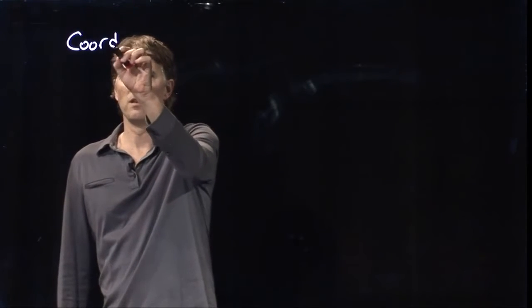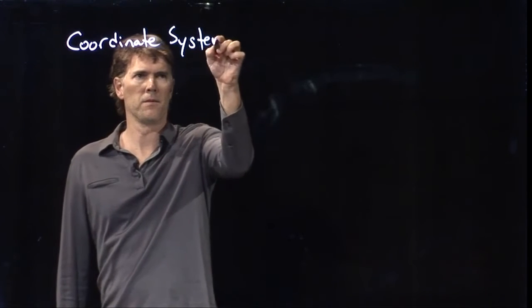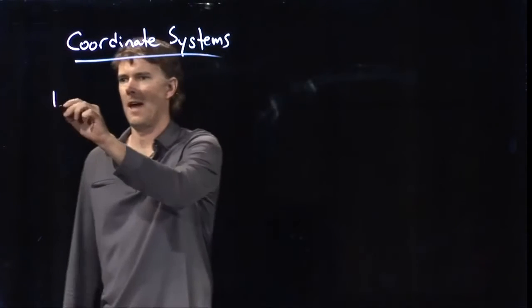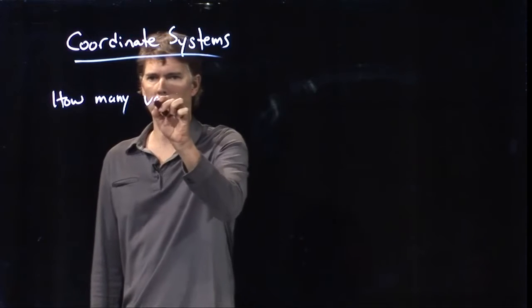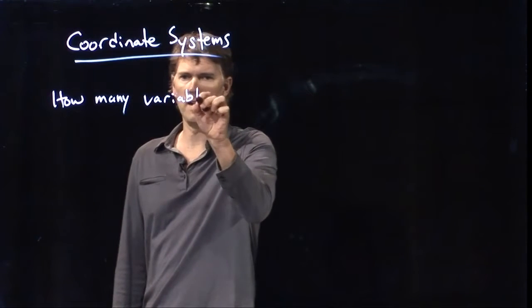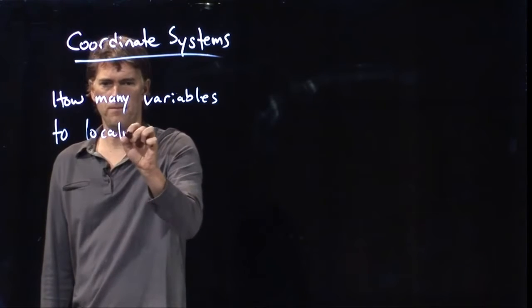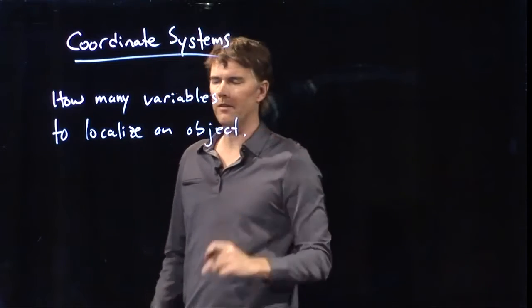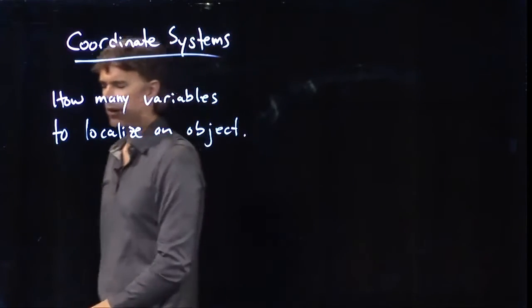So when we think about coordinate systems, what do we think about? Well let me ask you guys a question. How many variables do we really need to localize a point or an object? If you want to say this object is in a particular location, how many variables do we need?